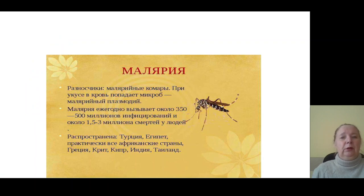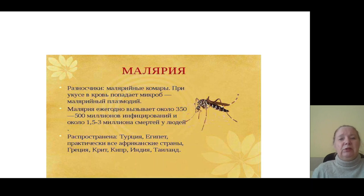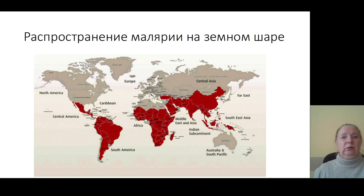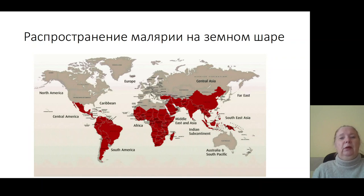The morbidity of malaria every year is approximately 500 million patients infected, and 3 million patients die from those infections every year. These infections spread in tropical countries with hot climate, in Turkey, Egypt, Greece, India, Thailand, Africa, and Asia. On the map you can see the spread of malaria — for example, India, Africa, and South America.